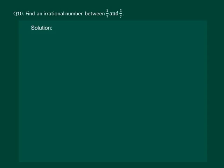Let us read the question. Find an irrational number between 1 by 7 and 2 by 7.